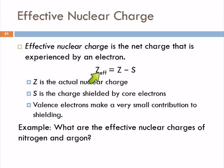So we can say the effective nuclear charge is the actual nuclear charge minus the shielding caused by the core electrons. So let's look at nitrogen and argon.